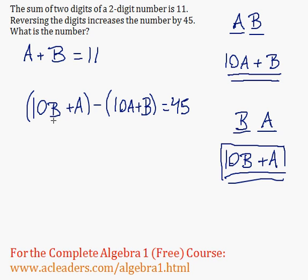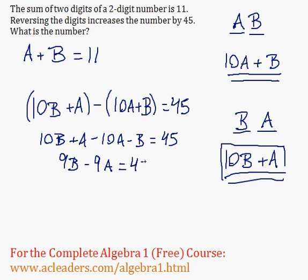So let's now just combine and simplify everything we have here. 10B plus A minus 10A minus B equals 45. 10B minus B is 9B. A minus 10A is negative 9A. That's equal to 45.